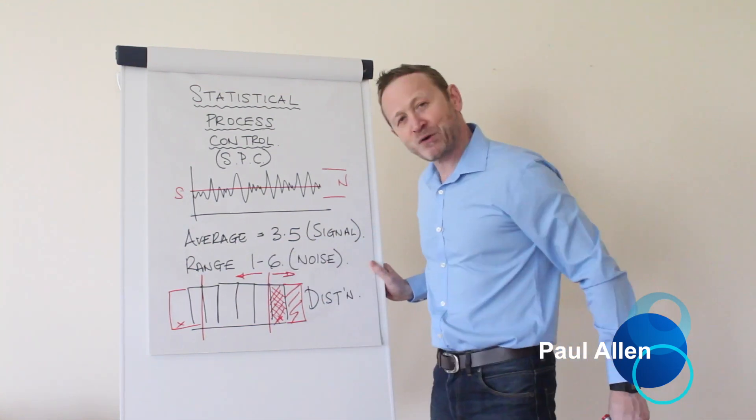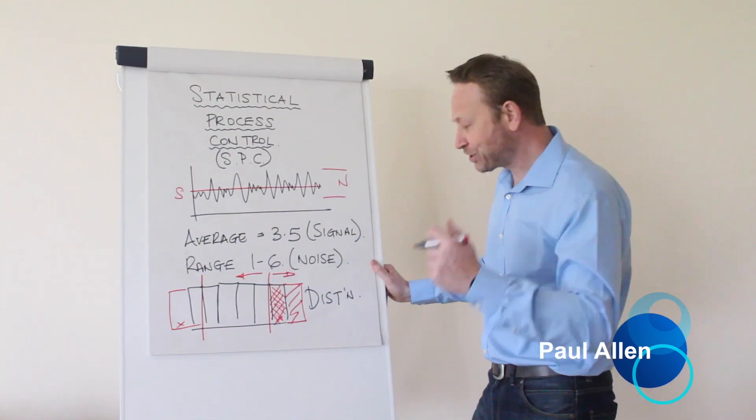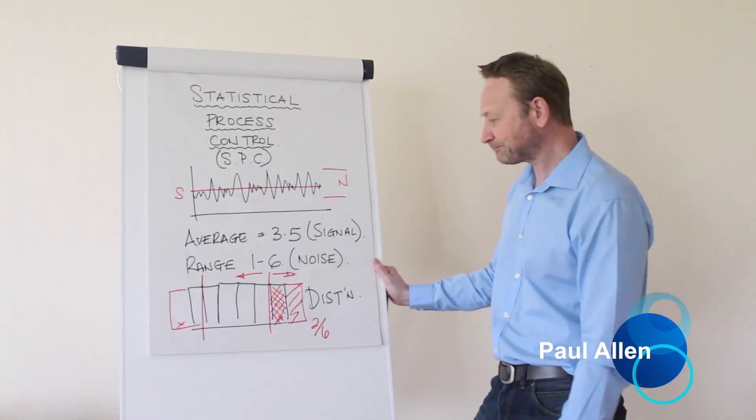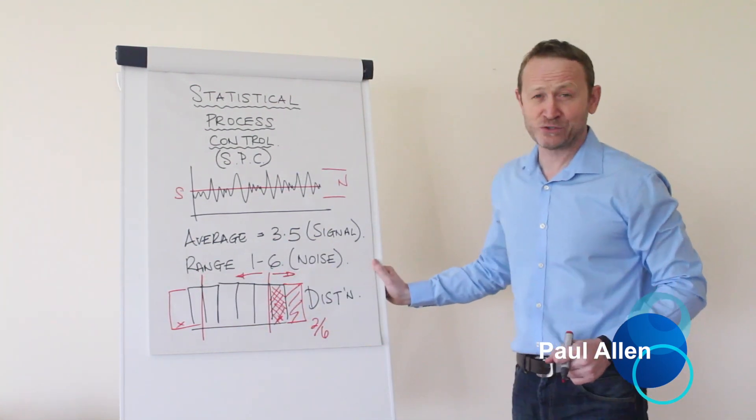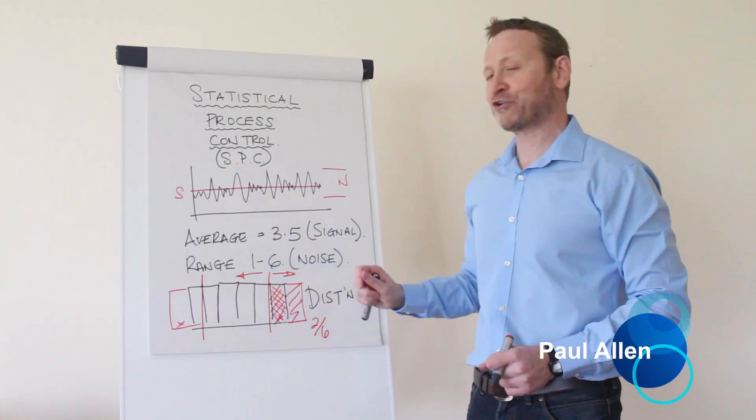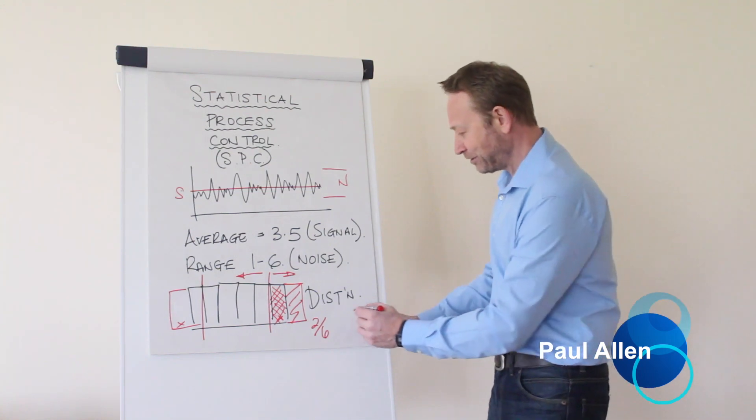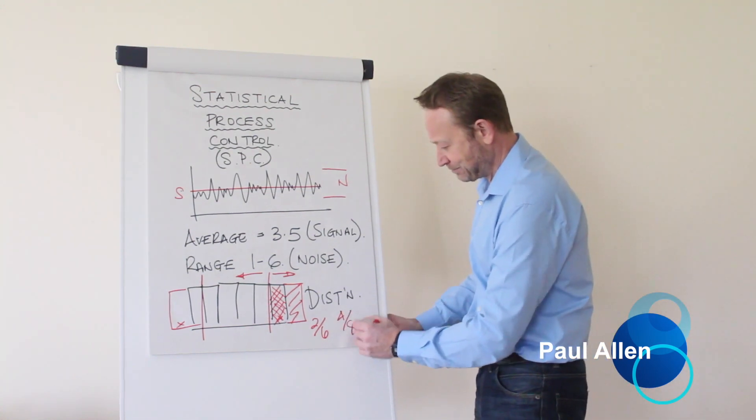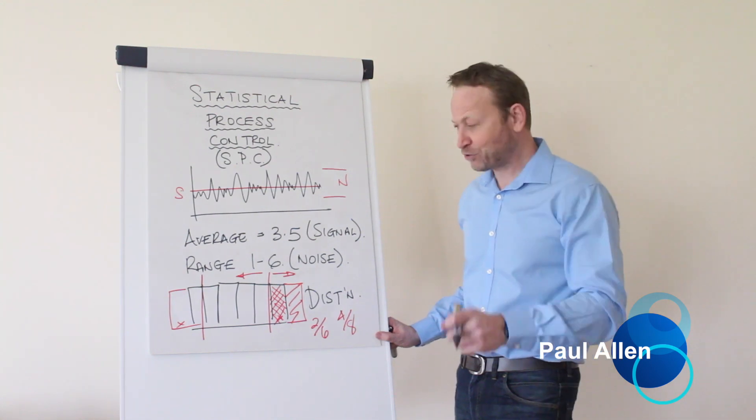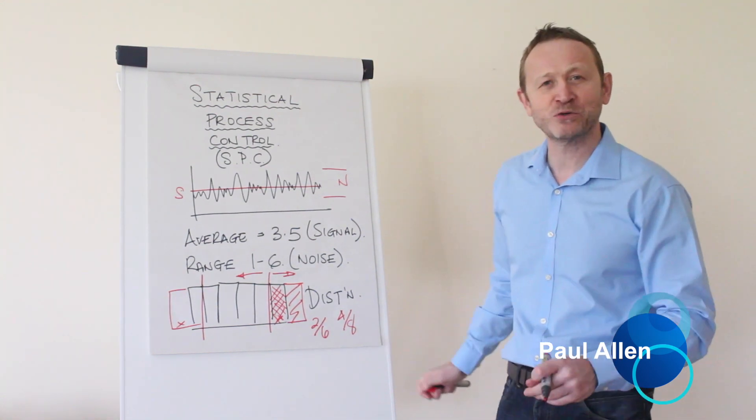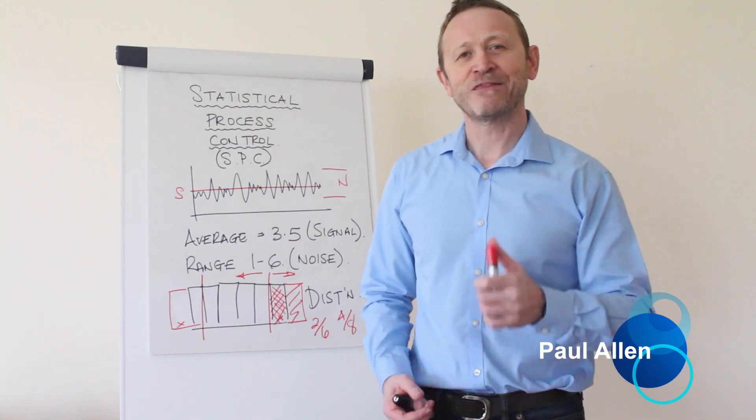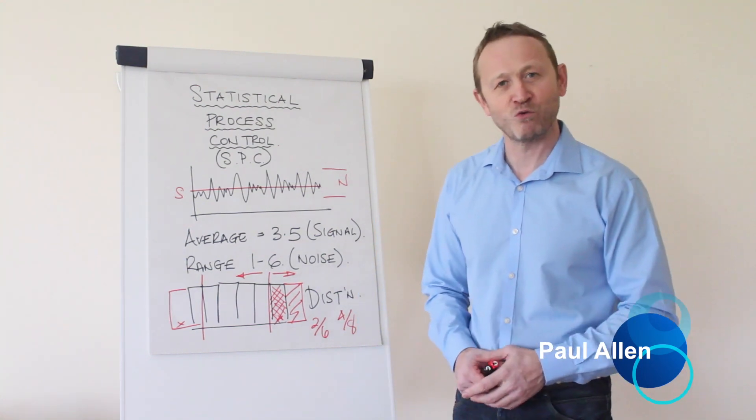Now before I switched my process on, I was going to get a 2 in 6 defect rate. 1s and 6s. Because I've allowed the operator to use the specs to judge the process, he's now creating double the defects essentially. He's now creating 4 in 8. That is what your operators will do if you don't give them statistical process control. They will typically make the process worse.